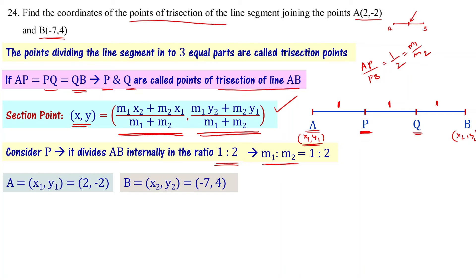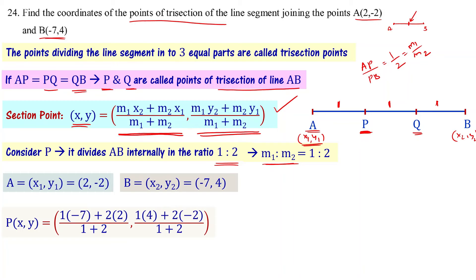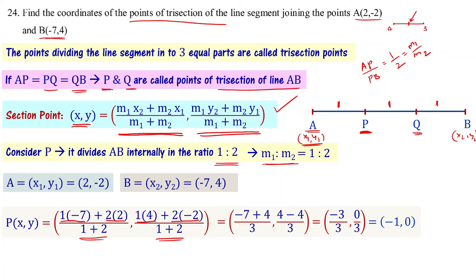Now substitute all values into the section formula. Section point P = ((m1·x2 + m2·x1) / (m1 + m2), (m1·y2 + m2·y1) / (m1 + m2)). Simplifying this gives the answer as (-1, 0). So this is one of the trisection points: P = (-1, 0).